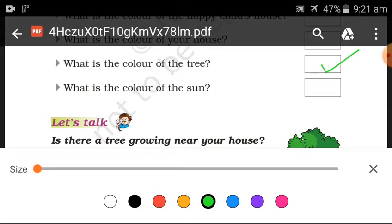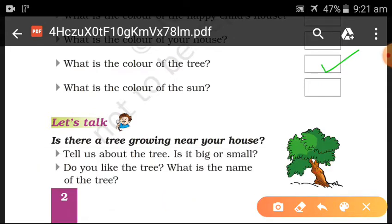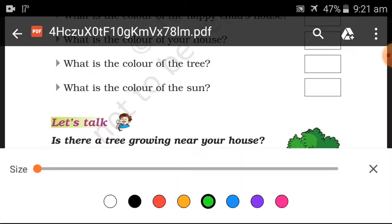What is the color of the sun? Yellow. If you add yellow, then your color of the sun is yellow.